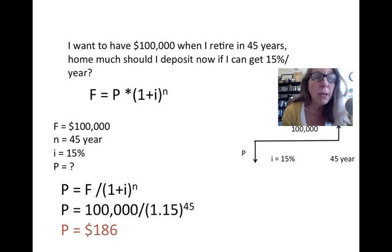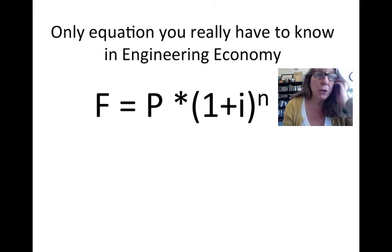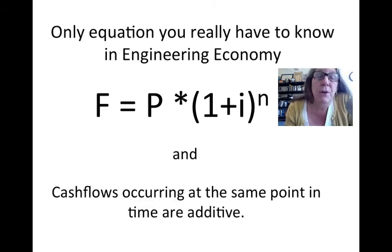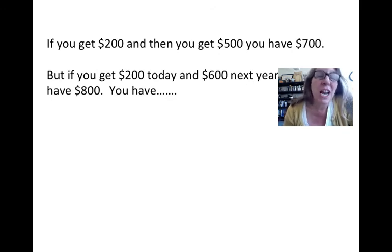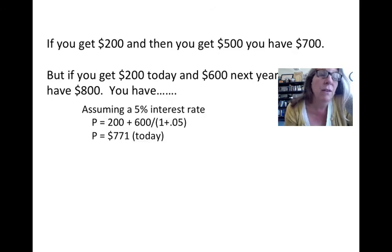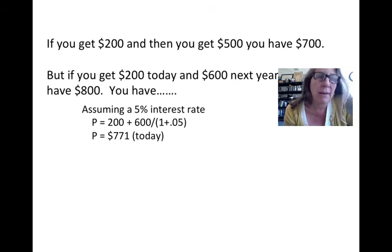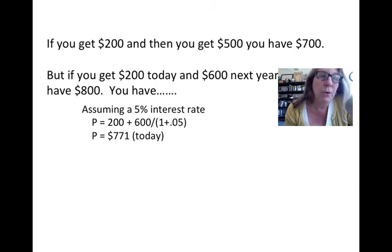The only equation you'll ever need in engineering economy is F = P(1+i)^n, but you also need to know that cash flows occurring at the same point in time are additive. For example, if you get $200 and $500 at the same time, you have $700. But if you get $200 today and $600 next year, you don't simply have $800 — they occur at different periods. To find today's total, you take the $200 now and find the present value of the $600 by discounting it at 5%, giving you $771 today.